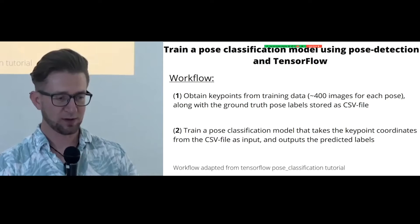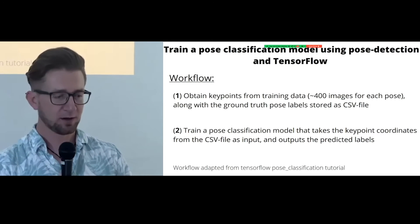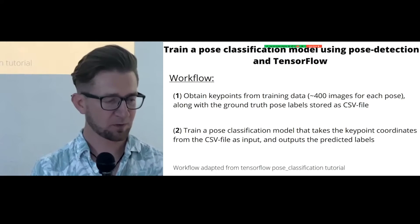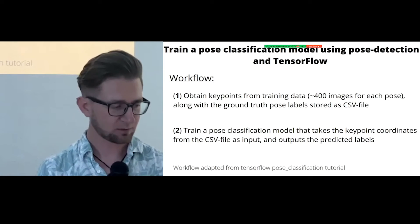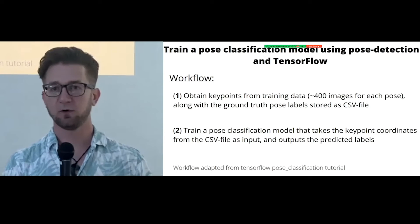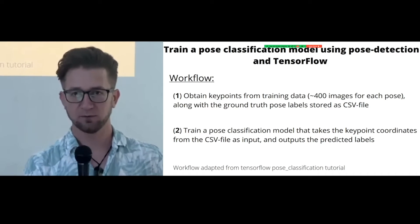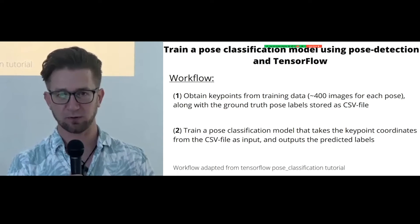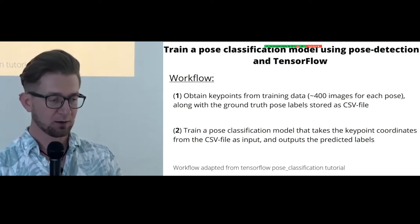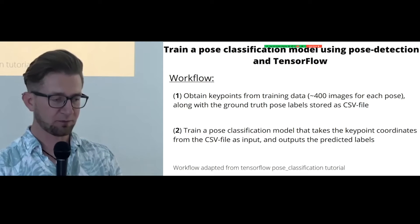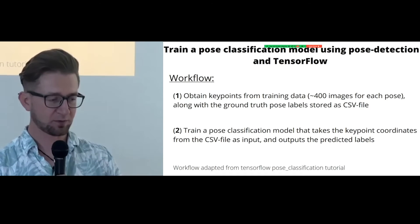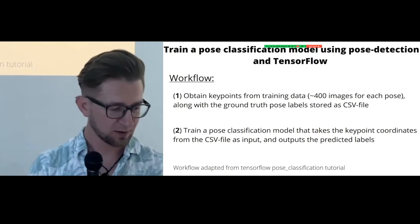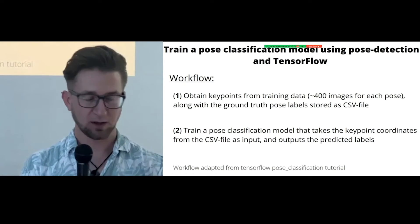Next, we trained a pose classification model using the pose detections from MoveNet and TensorFlow. The workflow consists of two steps: first, we obtain keypoints from training data scraped from Google Images — around 400 images per asana — and store them along with ground truth pose labels as a CSV file. This CSV is then used as input to train a pose classification model that takes keypoint coordinates as input and outputs predicted pose labels.